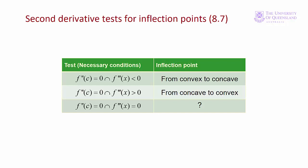Here's another way of expressing the second derivative test for an inflection point. We know the necessary condition is that the second derivative at point C is equal to zero. We can express the fact that the second derivative changes sign in terms of the third derivative — the third derivative is how the second derivative changes. If the third derivative is negative, then the second derivative is going from positive to negative, and the function goes from being convex to concave. If the third derivative is positive, then the second derivative will go from negative to positive, and the function will go from concave to convex. If the third derivative is equal to zero, our test is inconclusive.